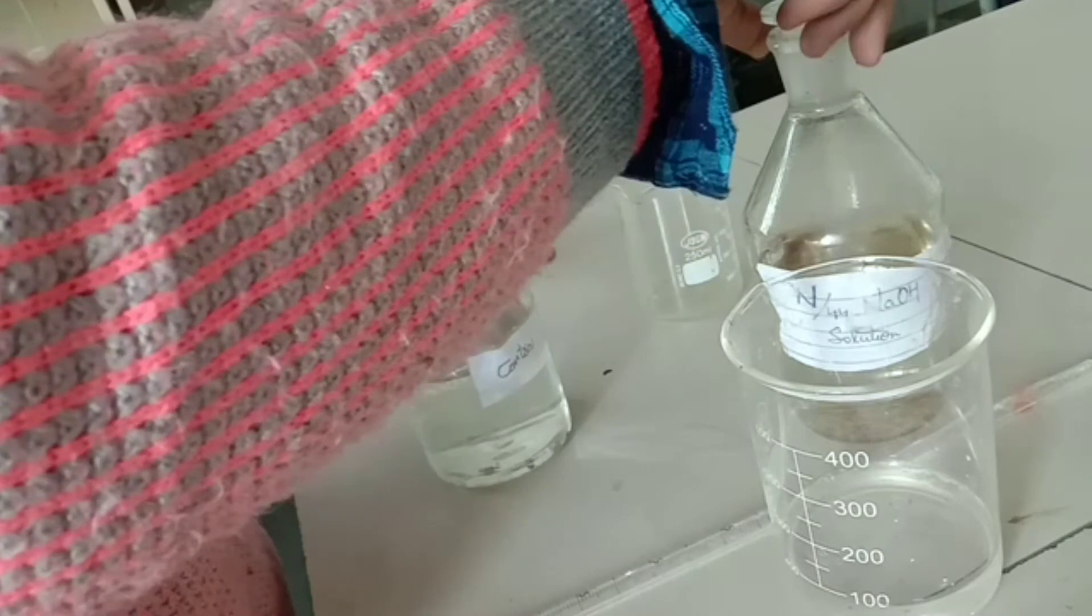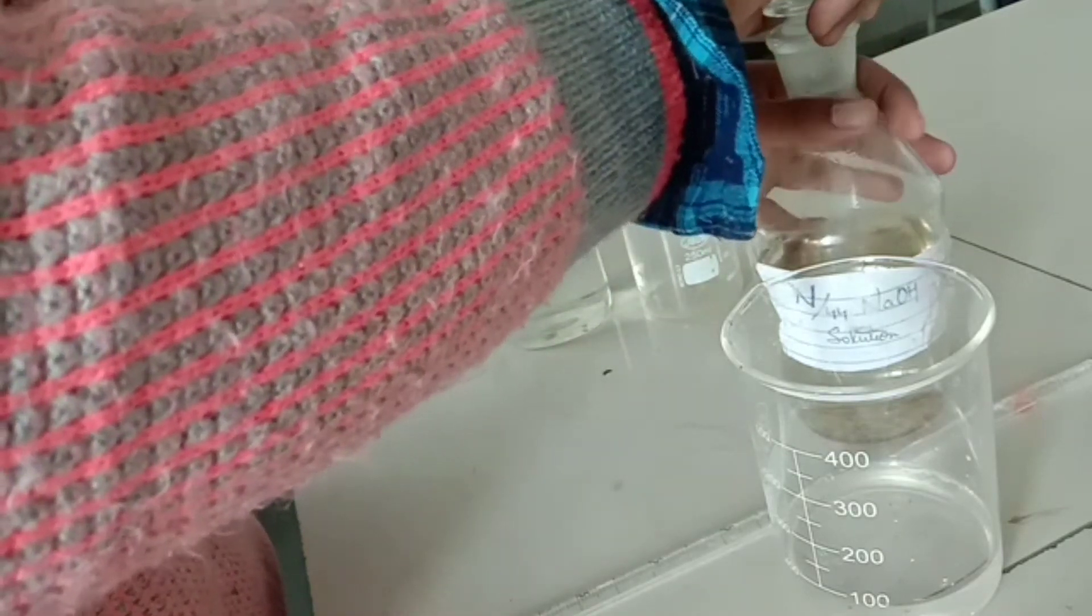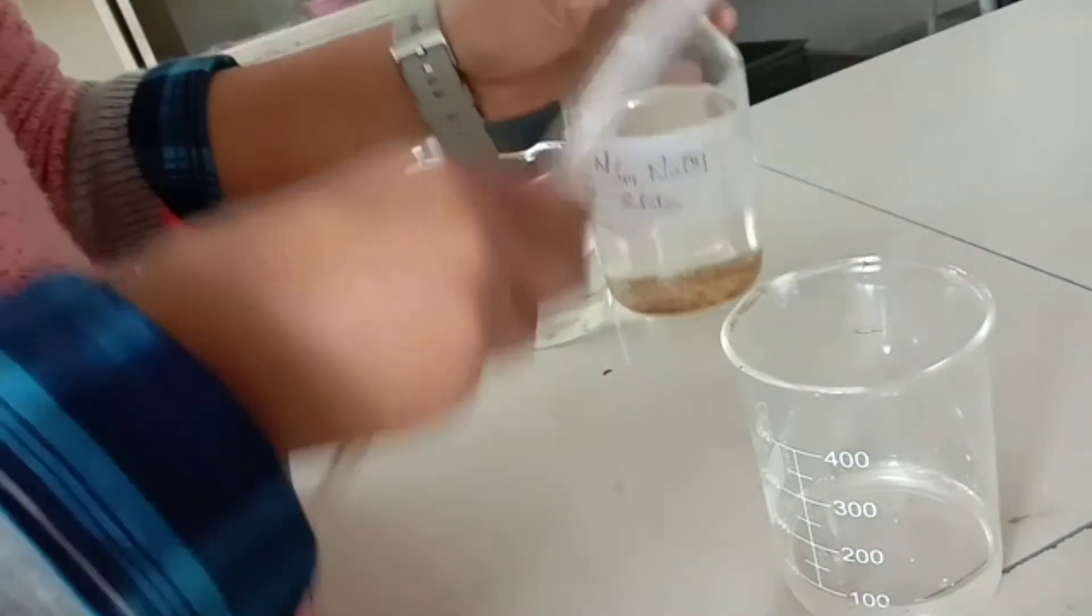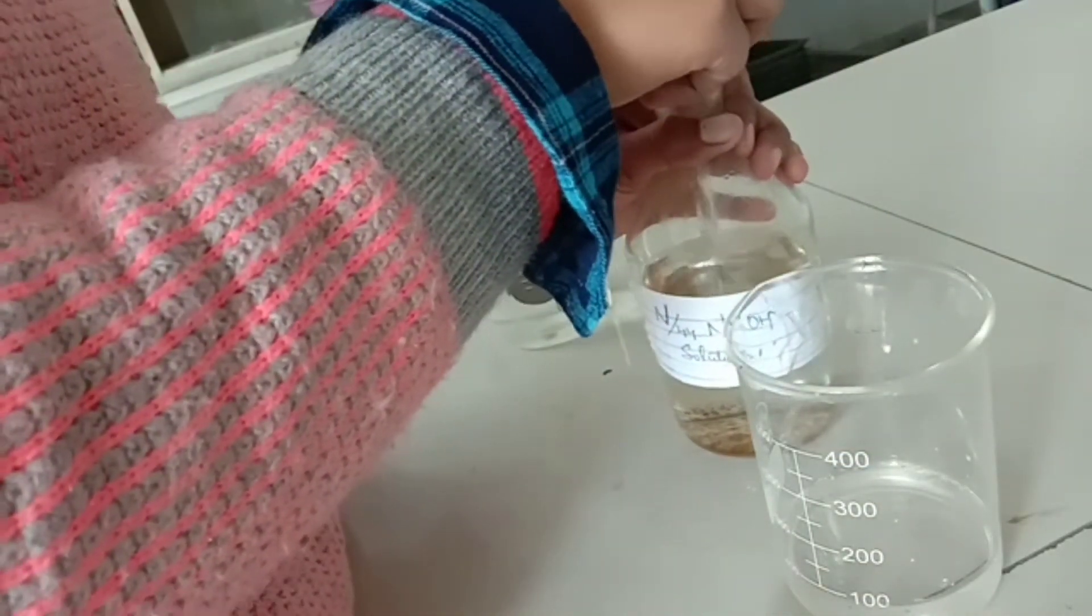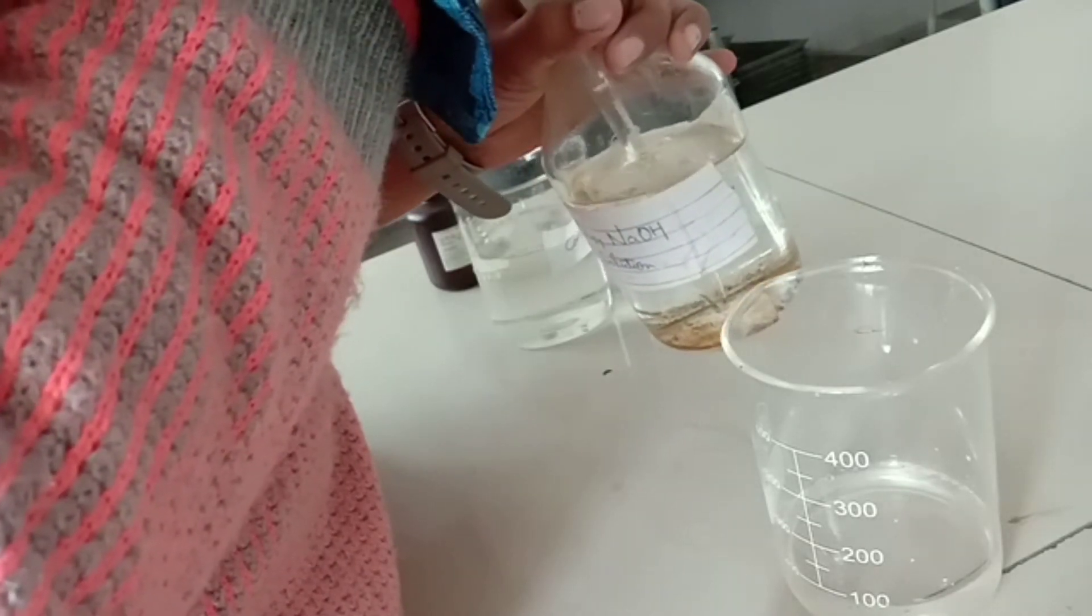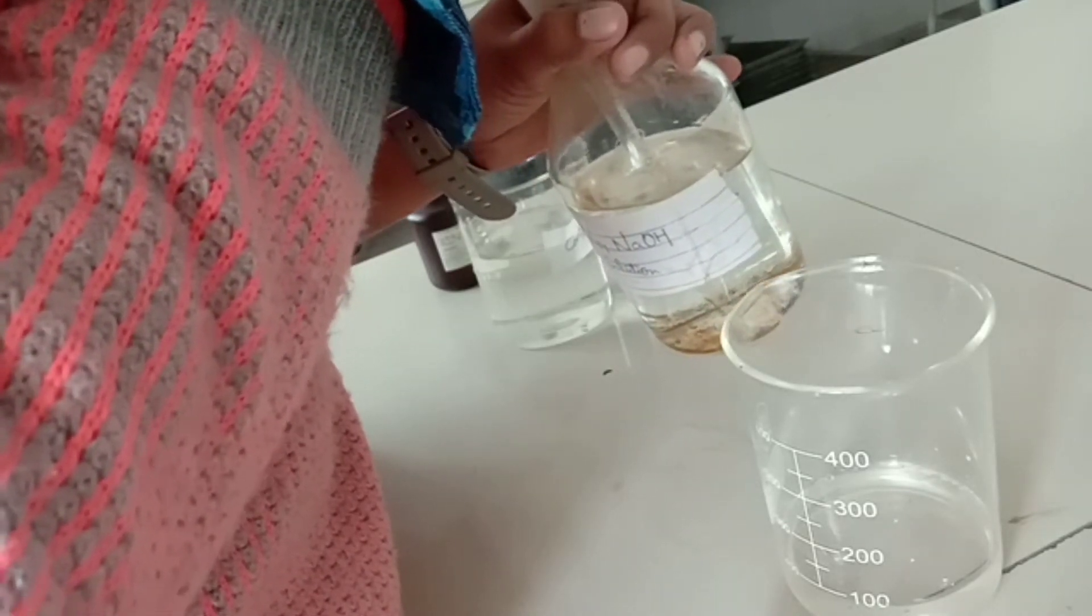So if CO2 is present in the water, then the pink color will not appear and we have to titrate the sample with N by 44 NaOH. We will take it in the pipette and titrate the water sample.